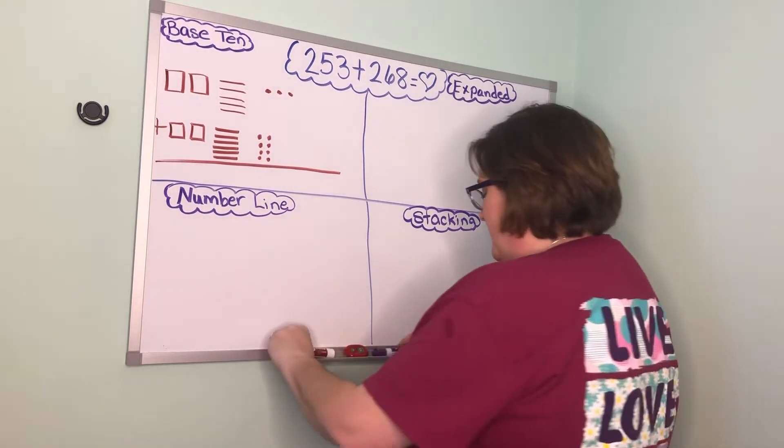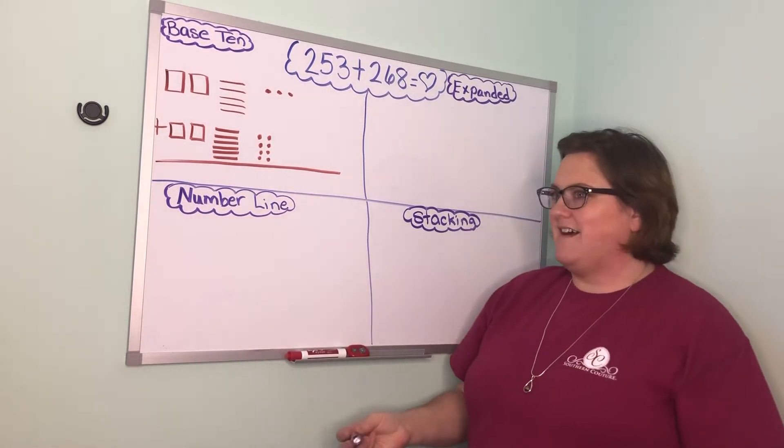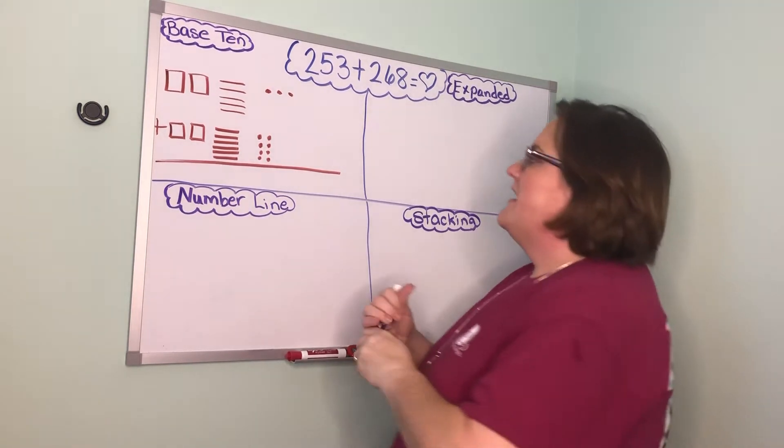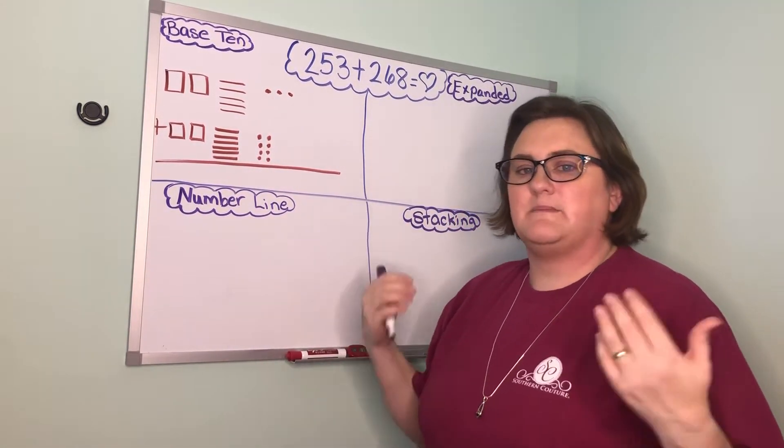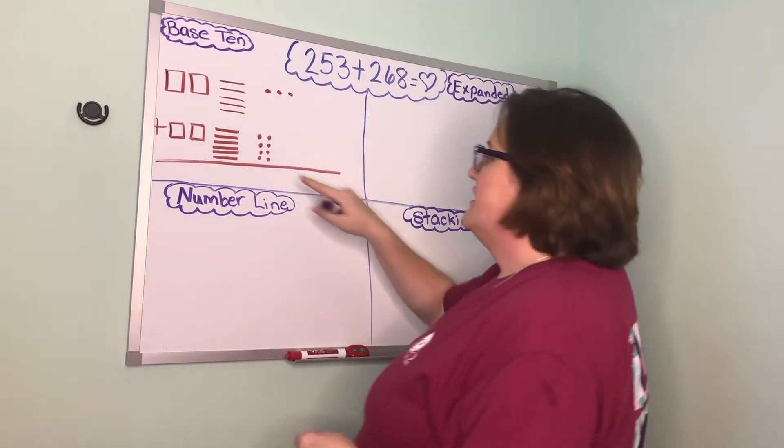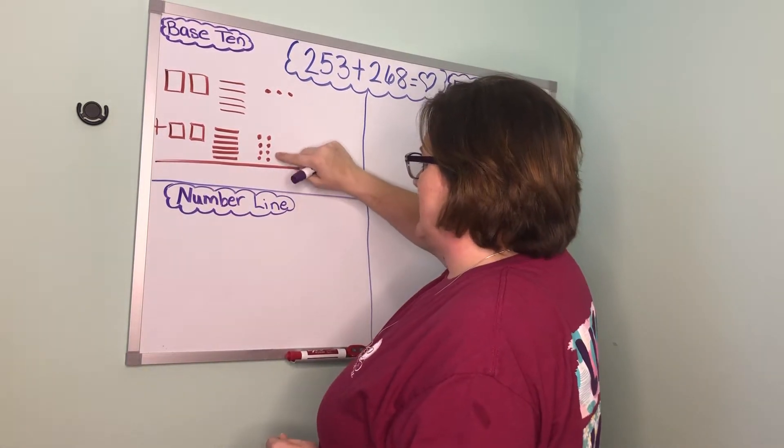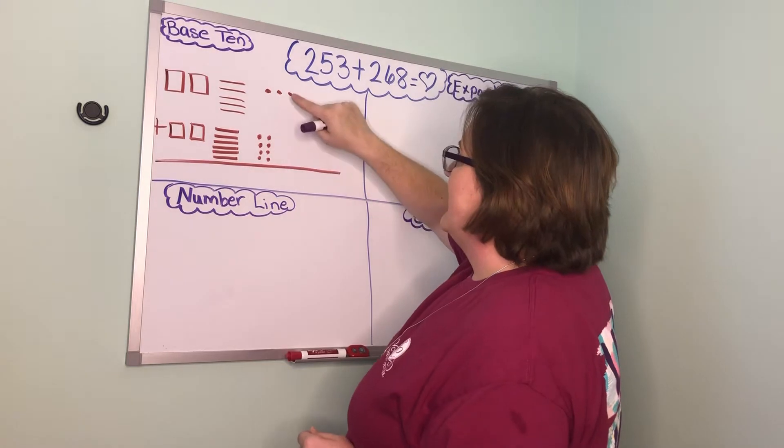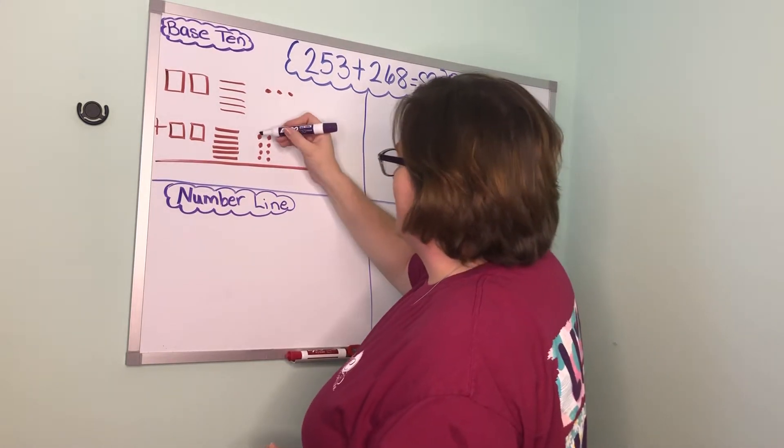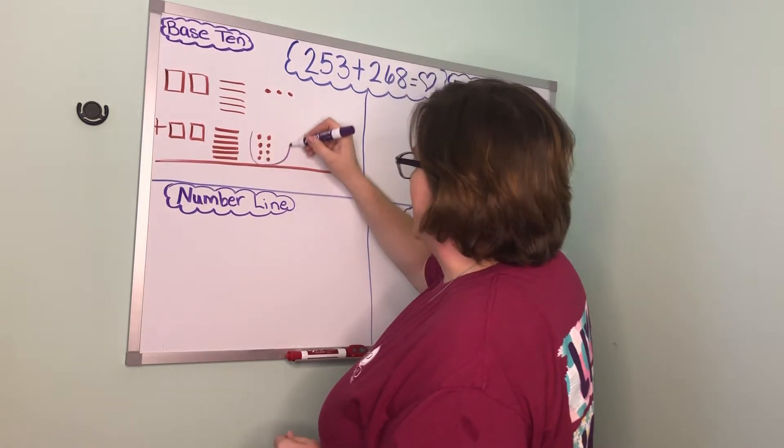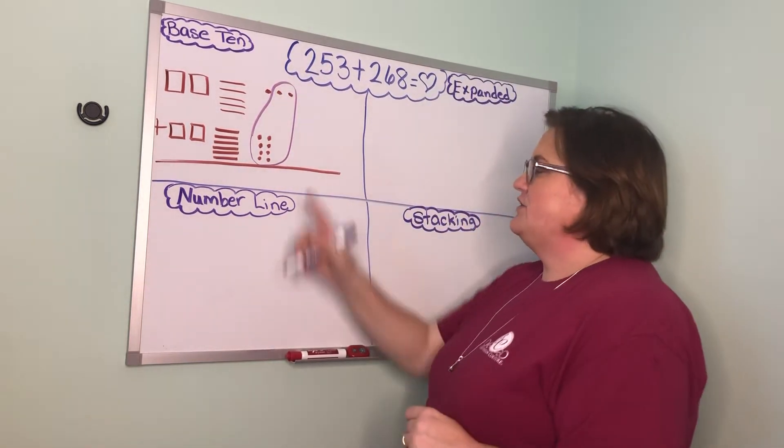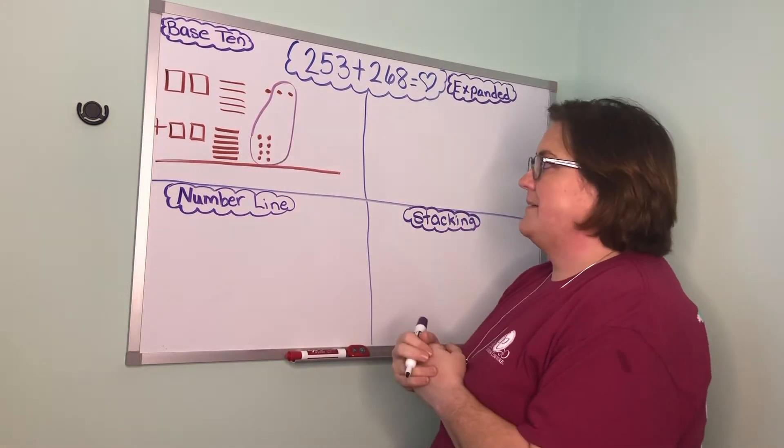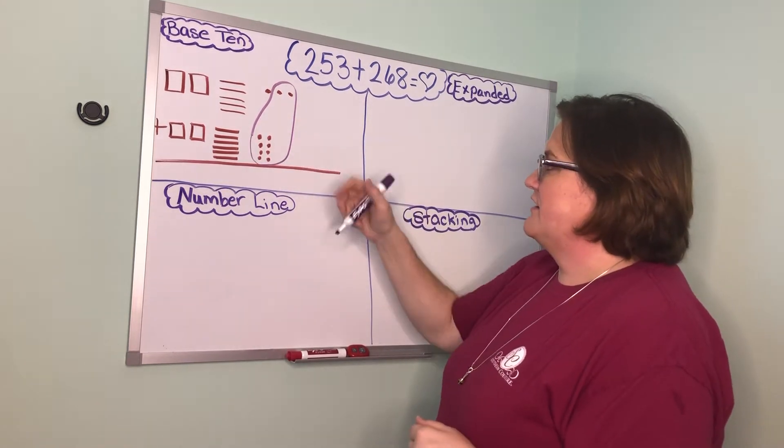So now remember we always start with the ones. I'm going to count up and first I'm going to see if I can make a bundle of 10. So I know I have eight down here, two, four, six, eight, nine, ten. So I can make a bundle here. So there is my bundle.